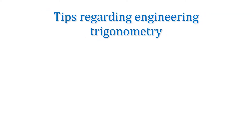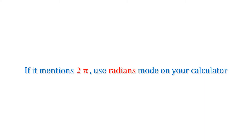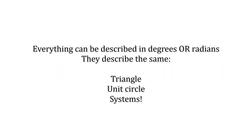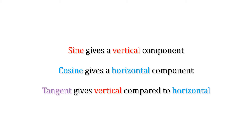Some tips regarding engineering trig: if your question mentions omega, use radians mode on your calculator by selecting the correct angle setup. If it mentions 2 pi, use radians mode. If it mentions omega or 2 pi, then it's probably something spinning and is a periodic wave. Everything can be described with degrees or radians because they describe the same triangle and the same systems — like miles per hour compared to kilometers per hour. Remember the sine function gives us a vertical component or opposite side; cosine gives us the adjacent or horizontal; and tangent gives us the vertical compared to the horizontal.